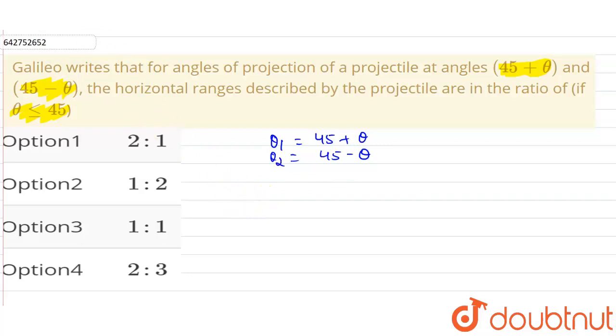As we know that the range of a projectile motion is given as u² sin(2θ) / g, correct, sin(2θ) / g. Now for the first projectile having projection angle θ₁, so the range will be R₁ will be: